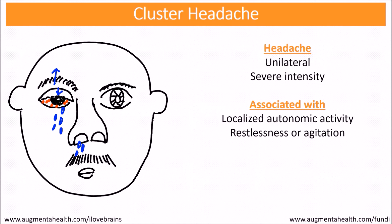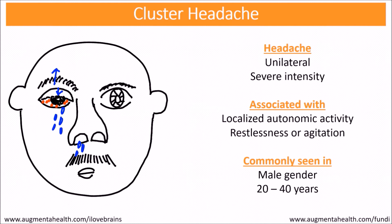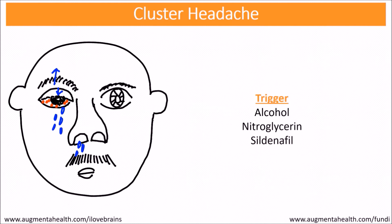This restlessness or agitation is a little different because in migraine, patients typically want to lie down and take some rest in a dark room, whereas cluster headache patients become very restless and agitated. It is commonly seen in the male gender between 20 to 40 years of age. Typical triggers include alcohol, nitroglycerin, and sildenafil.